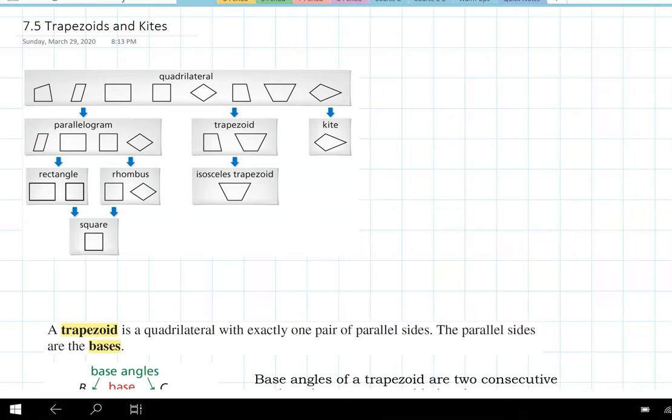Okay, this is our lesson on 7.5. We're going to be talking about trapezoids and kites. All of chapter 7 we've been talking about all these different types of quadrilaterals. We started out with parallelograms and then we talked about rhombuses and rectangles and squares, and today we're going to cover this other set of quadrilaterals: the trapezoids, the isosceles trapezoids, and the kites.